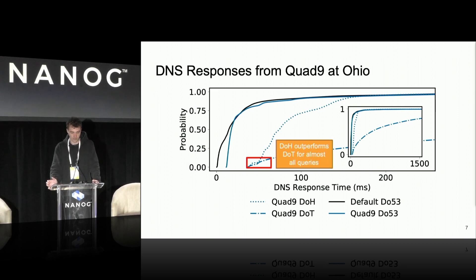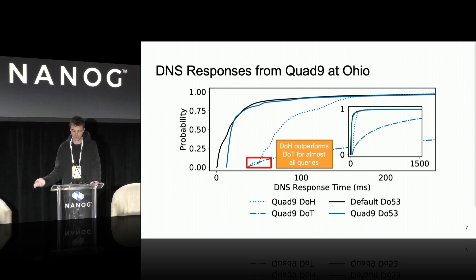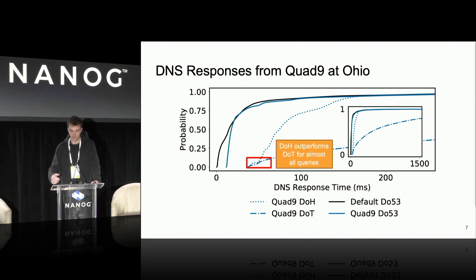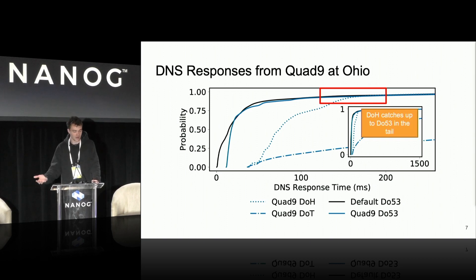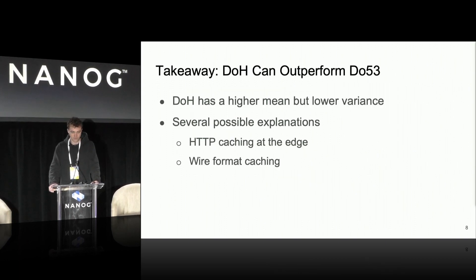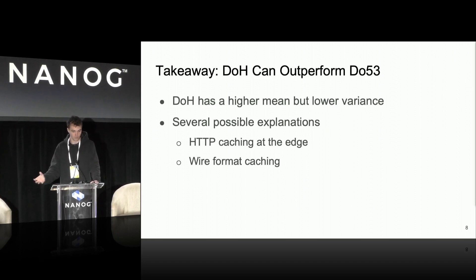With Quad9, we found that DOH is actually outperforming DOT for almost all queries. There seems to be behavior where DNS responses appear to be cached from Quad9's DOT resolver. We reached out to them, showed them our source code, and had some initial conversation but couldn't come to a conclusion. Once again, as with Google and Cloudflare, DOH is catching up to traditional DO53 in the tail response times. The key takeaway for query response times is that DOH can actually catch up to and in some cases outperform DO53 — within Cloudflare, Quad9, and Google.